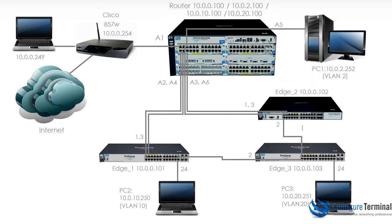So we've successfully been able to get the HP router to ping devices on the internet. The Cisco router is configured for NAT, so the HP router is being NATed onto the internet. Let's try doing the same thing on edge 2.